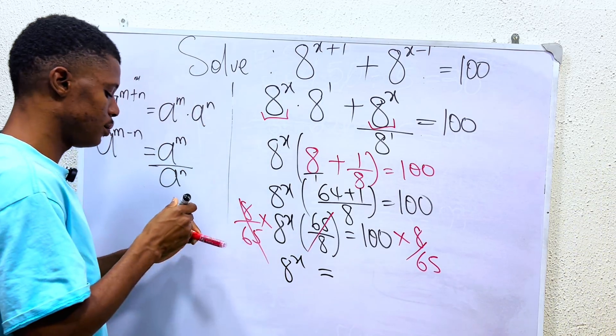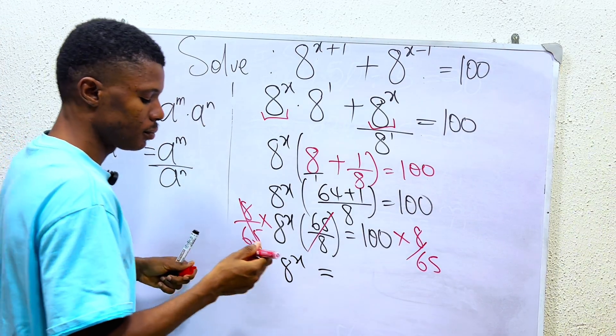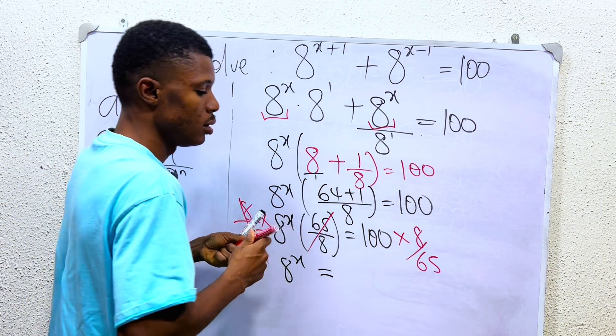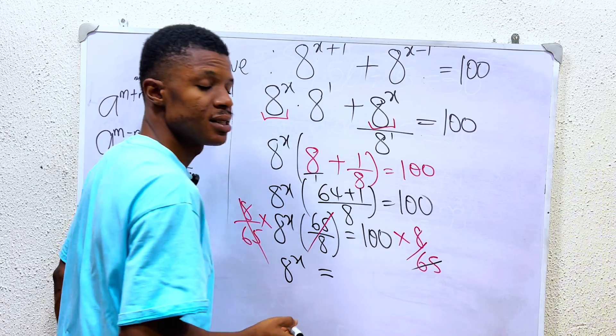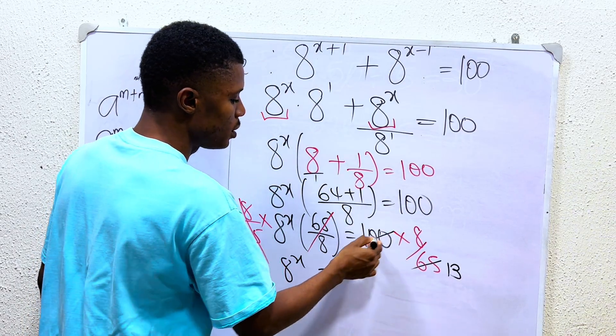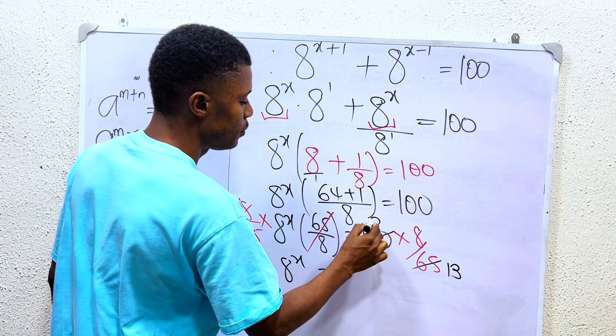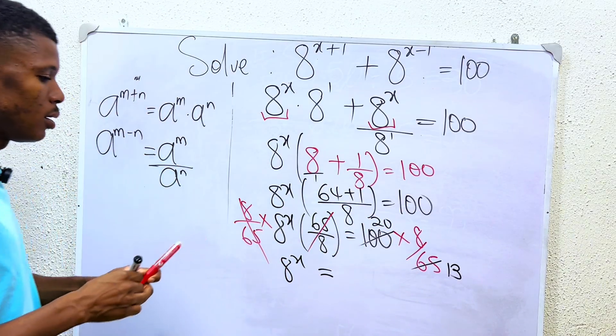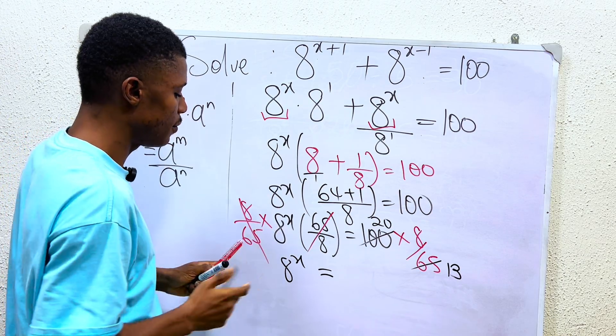What do you observe here? When we divide 65 by 5, we have 13. And when we divide 100 by 5, we have 20. So what do we have?